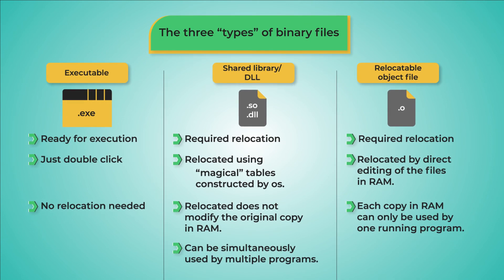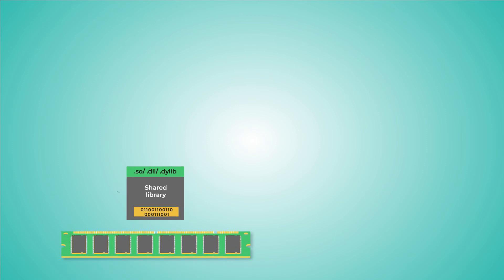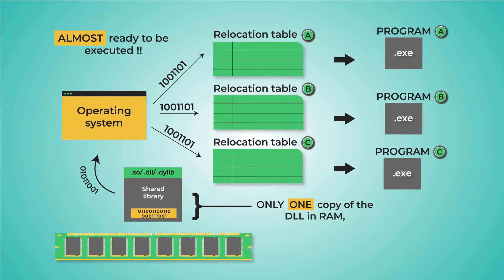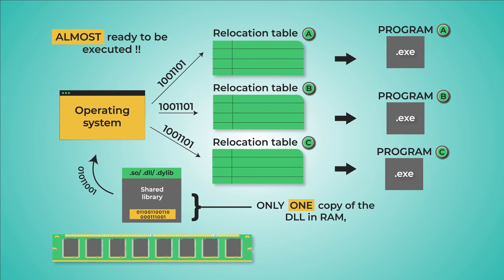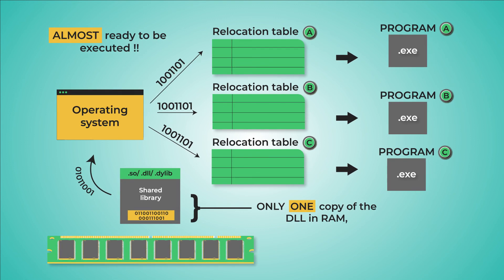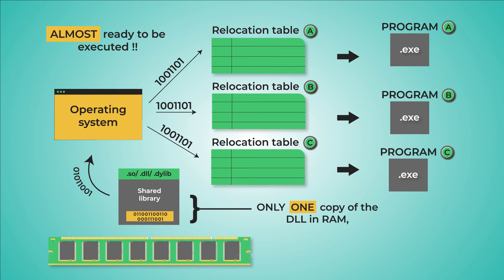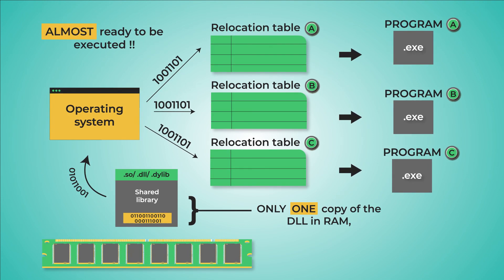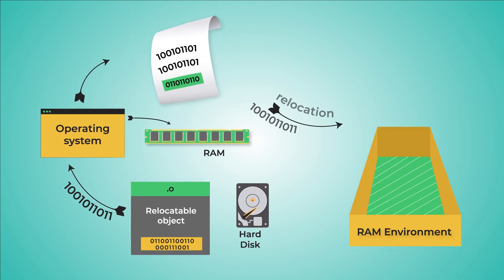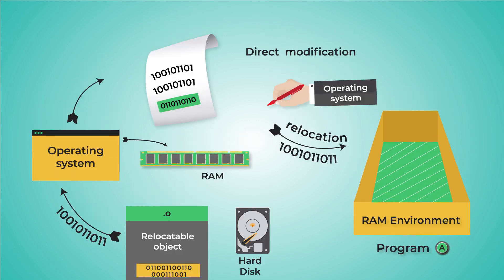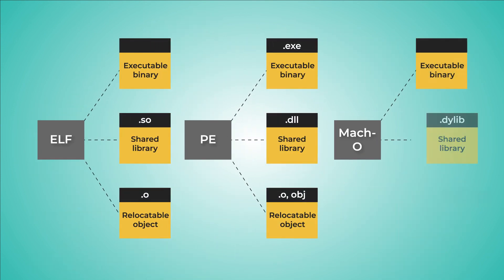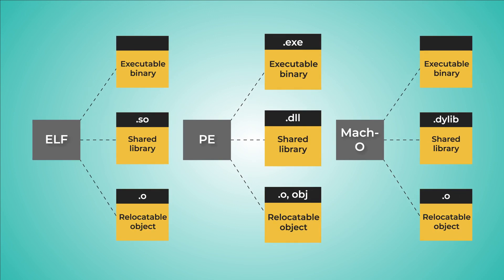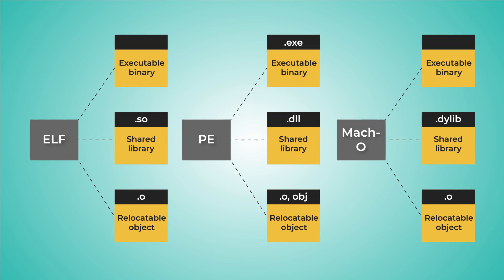The key to understanding relocation is that there are two variants used by the operating system. The first variant uses complex magical tables to avoid modifying the original binary file — this is used for shared libraries. The OS constructs these tables and duplicates them into the RAM environments of the running programs that need copies of the library, so it copies only these small tables rather than the library itself, enabling the OS to share the same file among multiple RAM environments. The second variant directly modifies the original copy of the binary file, and this variant is used on relocatable object files. Keep in mind that each executable format — ELF, PE, Mach-O — has its own way of providing these three types of binary files.